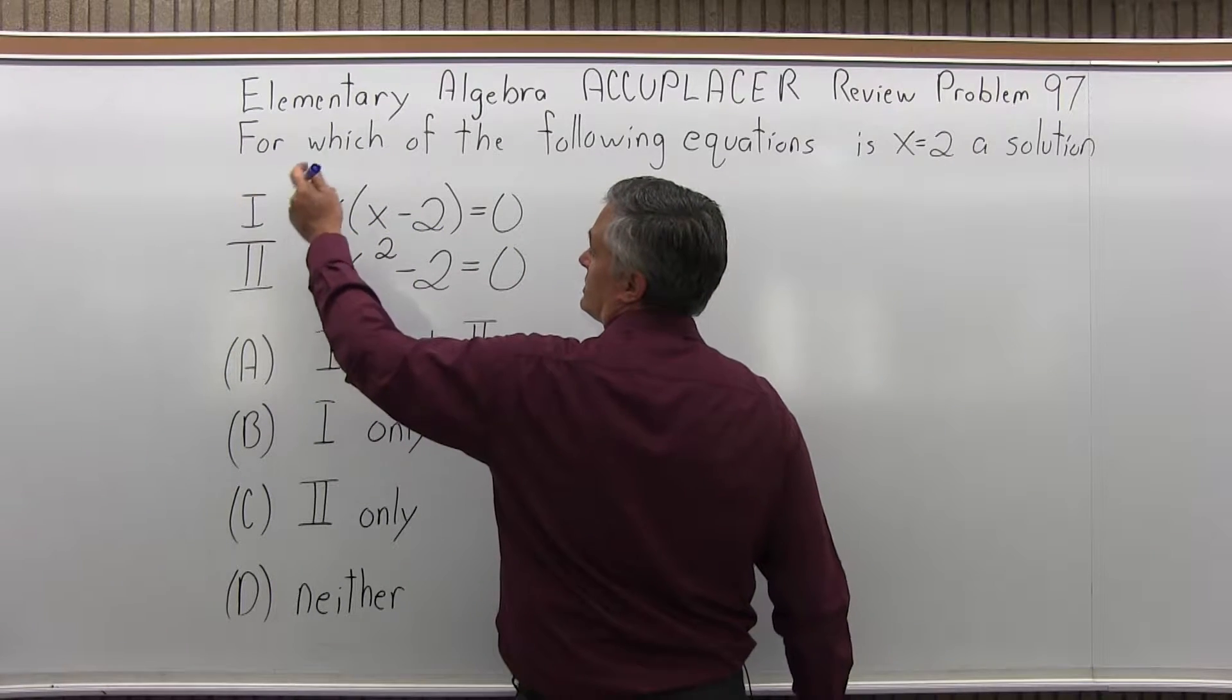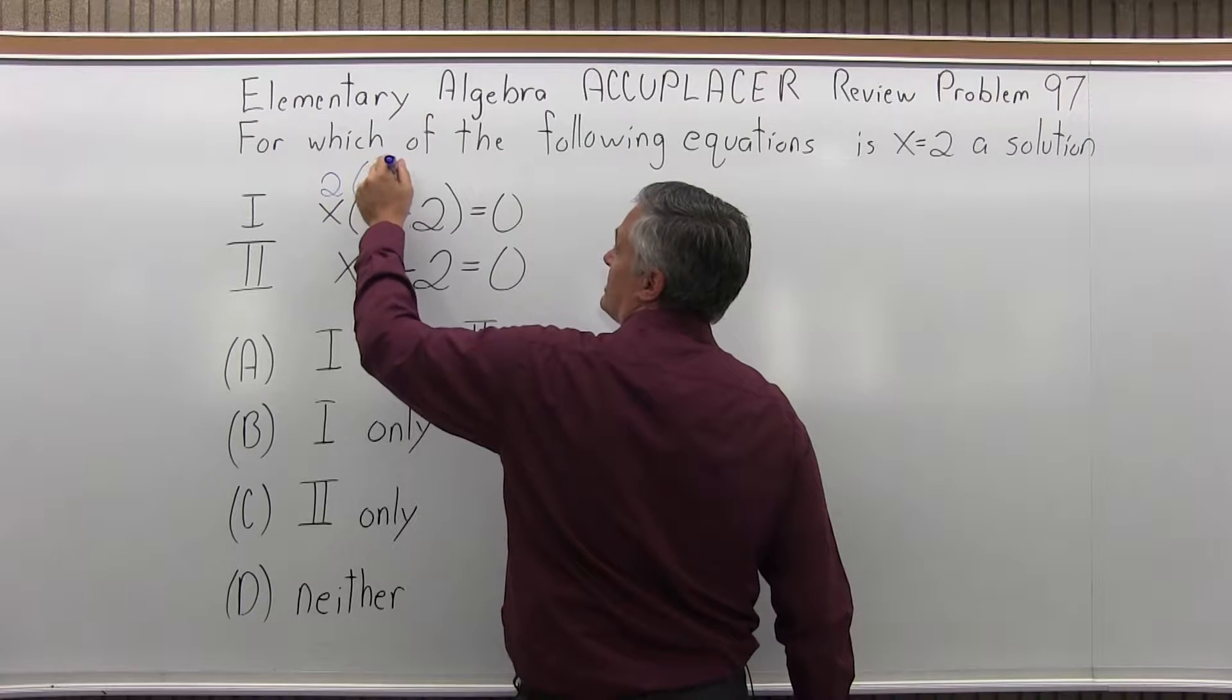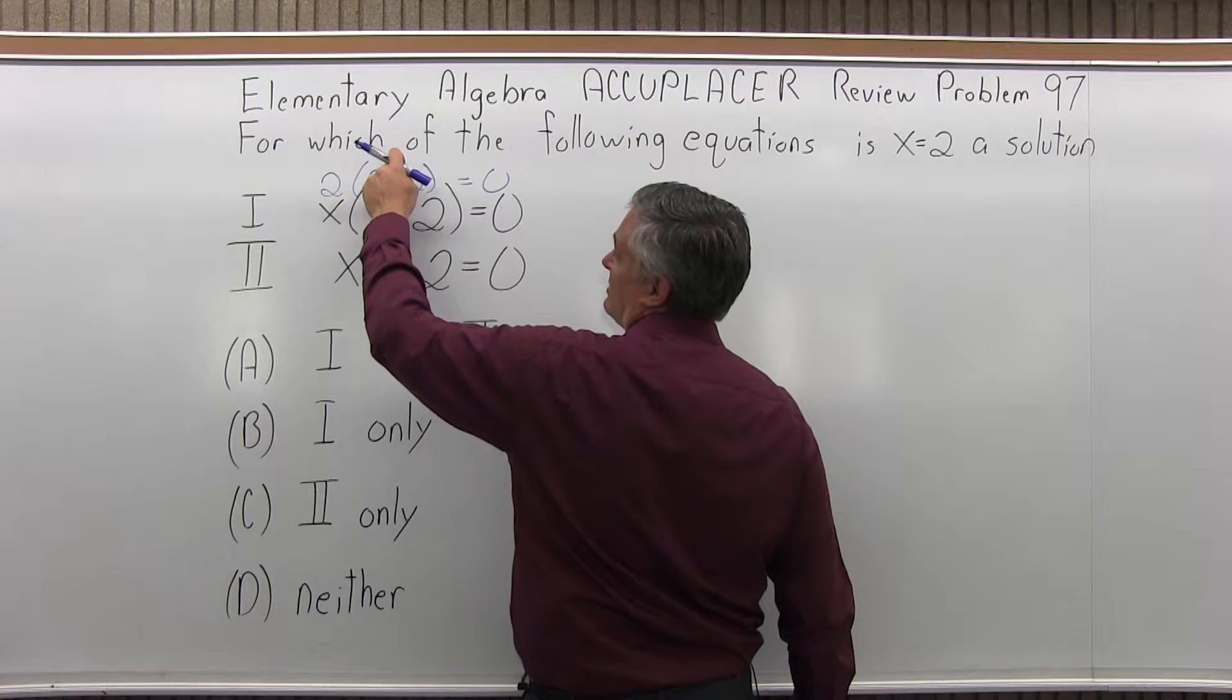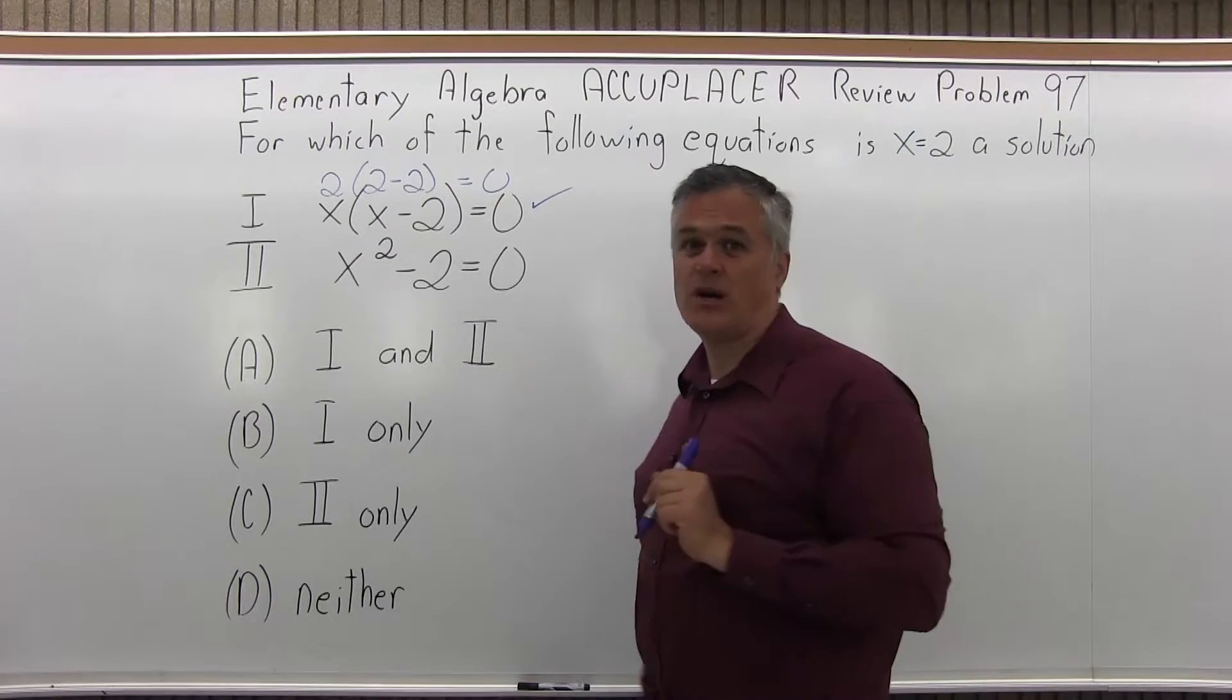So the top one, equation 1, 2 for x, you'd have 2 times x minus 2 is 2 minus 2. Is that equal to 0? Yeah, you'd have 2 times 0, 2 times 0 is 0, 0 equals 0. So it does work for option 1.